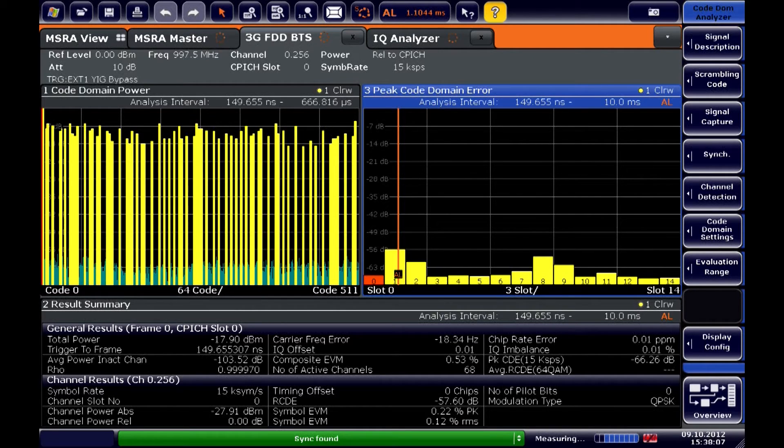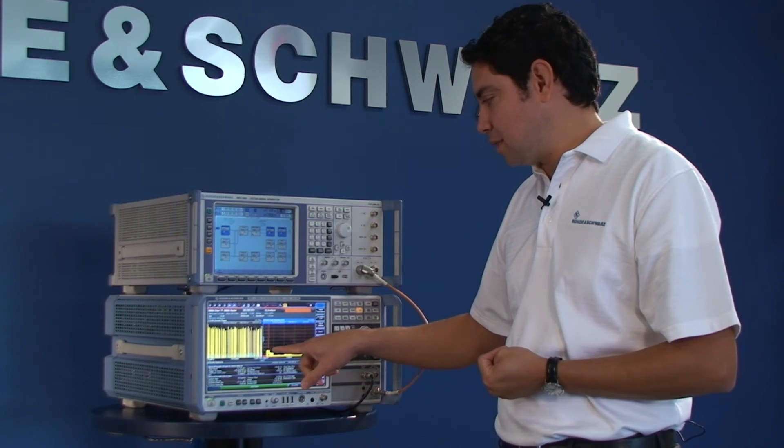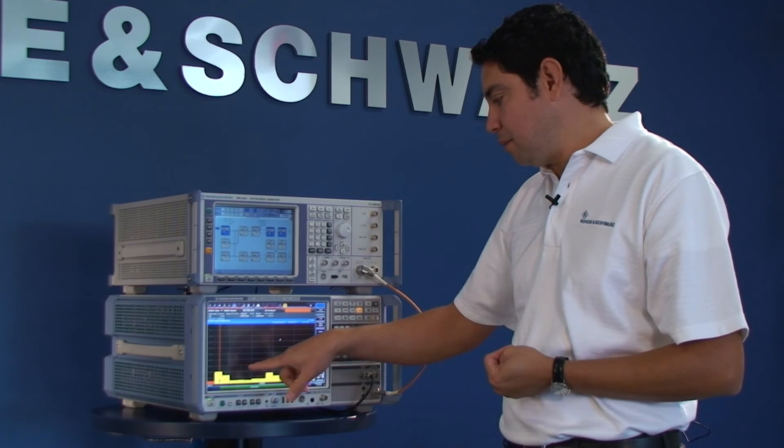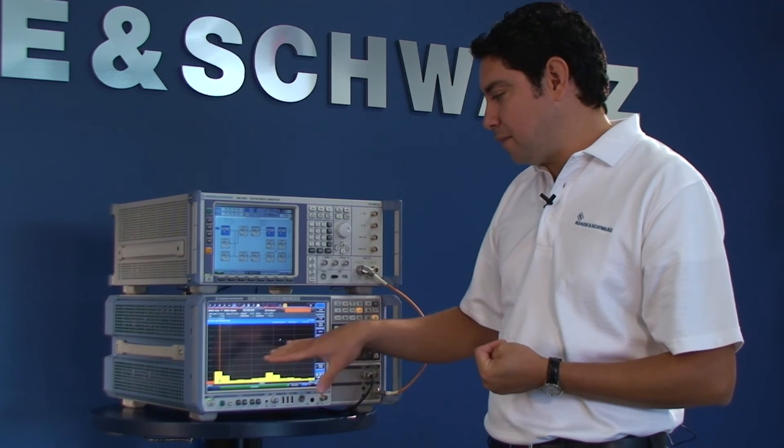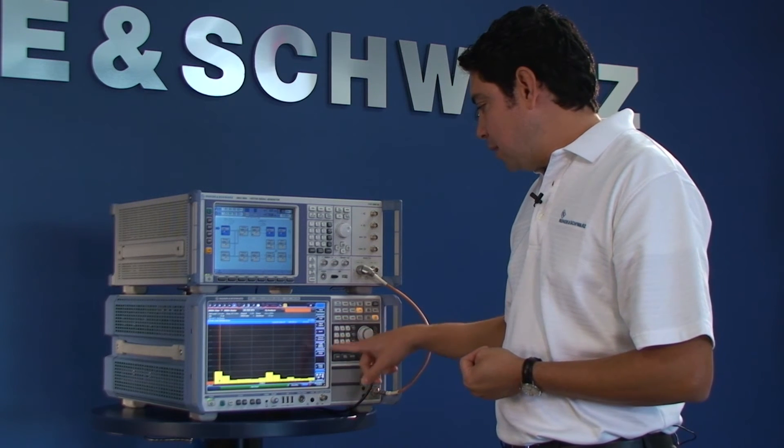I can see that my marker is already placed somewhat relatively close to the area of interest, which is the second slot in my UMTS transmission. Now to further fine tune the specific area of trouble, I'm going to enable one more measurement.